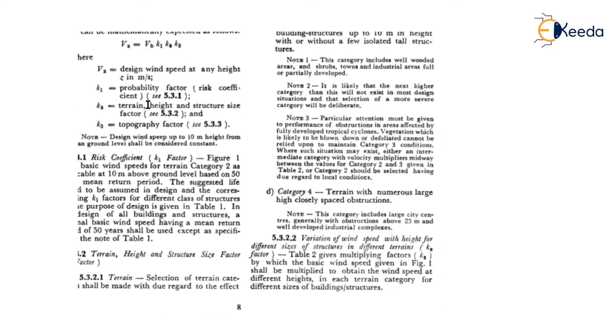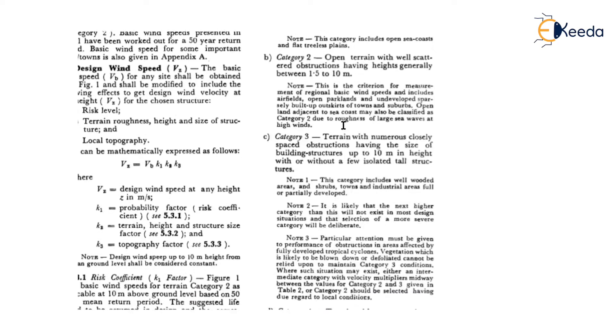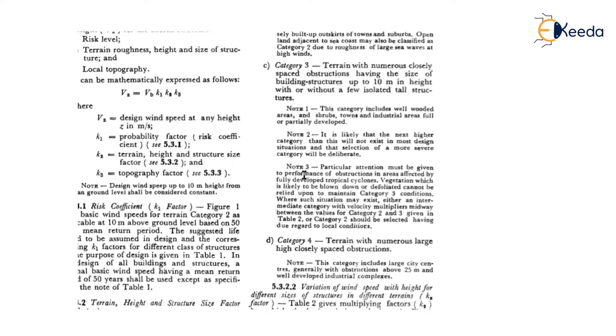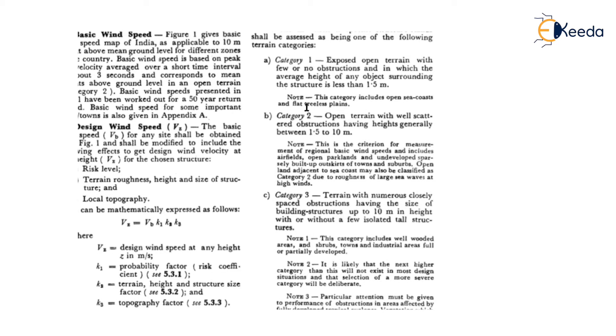K2 is the terrain factor, and its value depends on the class of building and the terrain category. There are four terrain categories. Category 1 is exposed open terrain where there are no other structures nearby — your building is in an open area. Category 2 is open terrain with well-scattered obstacles having heights generally between 1.5 to 10 meters surrounding the building.